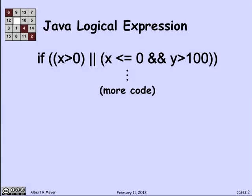Here's a Java logical expression. The way to decipher this is that the double vertical bar means or in Java, and the double ampersand means and in Java. So this is a conditional test, an if test, that is the guard on a bunch of code to be executed if this test comes out to be true.